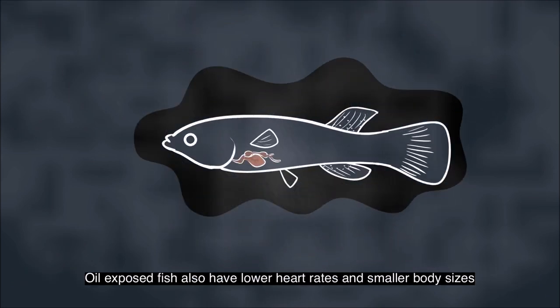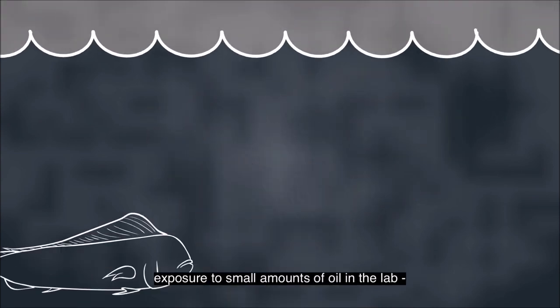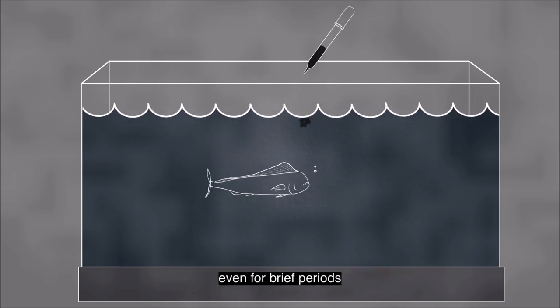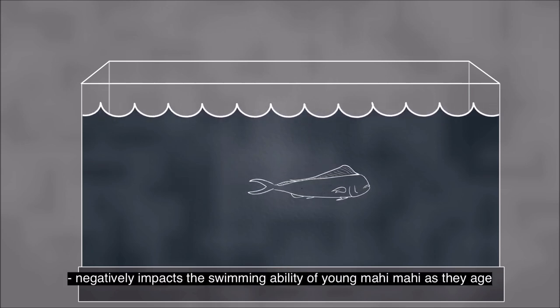Oil-exposed fish also have lower heart rates and smaller body sizes. Similarly, exposure to small amounts of oil in the lab, even for brief periods, negatively impacts the swimming ability of young mahi-mahi as they age.